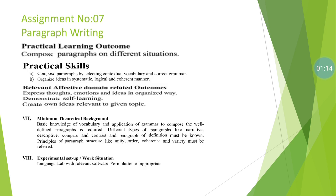The practical learning outcome is to compose the paragraph on different situations. Practical skill: compose the paragraph selecting contextual vocabulary and correct grammar, and organize the ideas in a systematic, logical, and coherent manner. The relevant effective domain-related outcomes we will be achieving from this topic include expressing thoughts, emotions, and ideas organized in different ways.